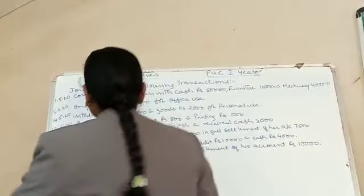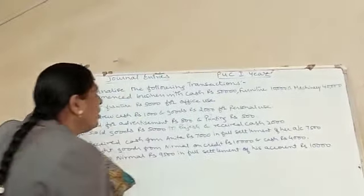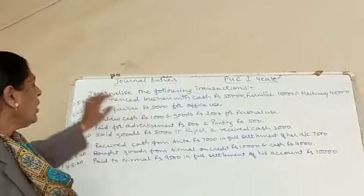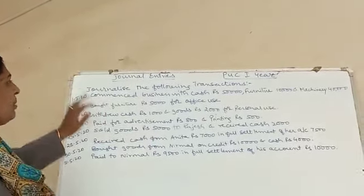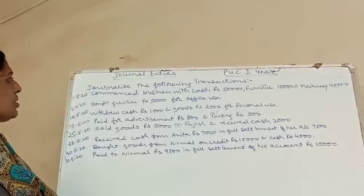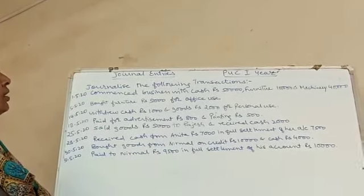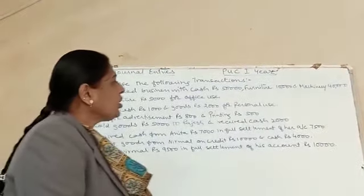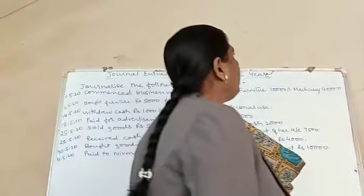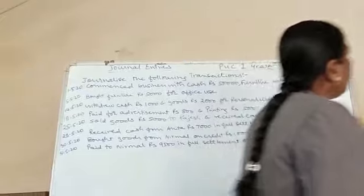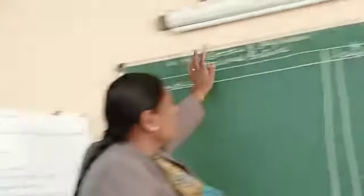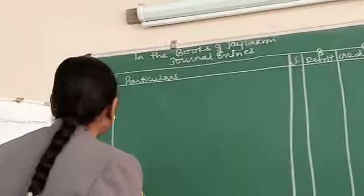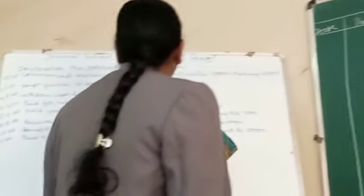Okay students, come to the next problem. The topic is journal literacy. Come to the problem: journalize the following transactions. The owner or proprietor is Jaila Kshmi. So write at the top 'In the books of Jaila Kshmi', and next write 'Journal Entry'.